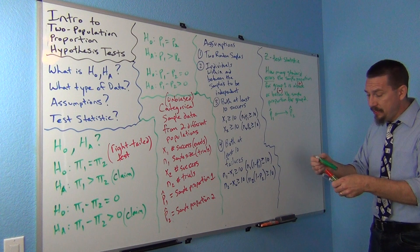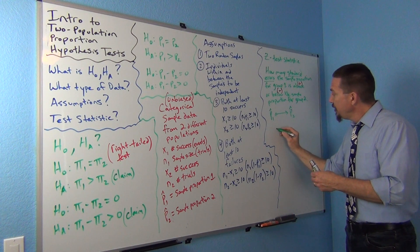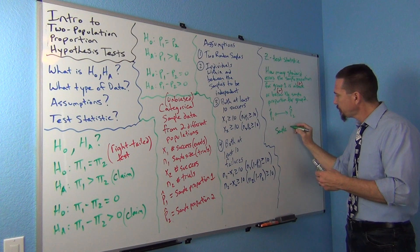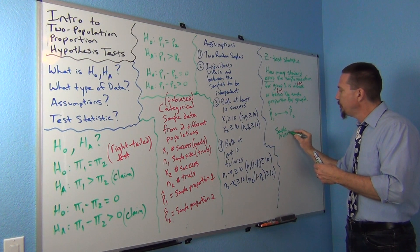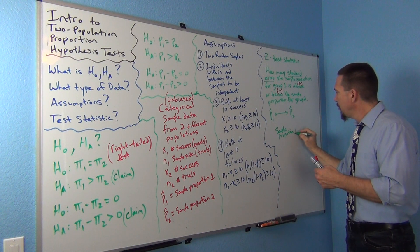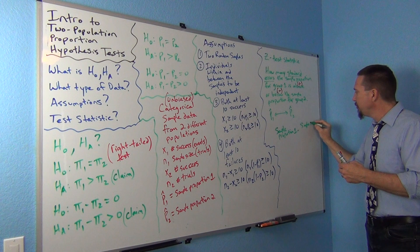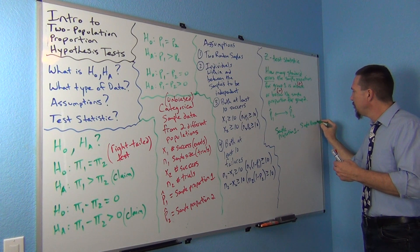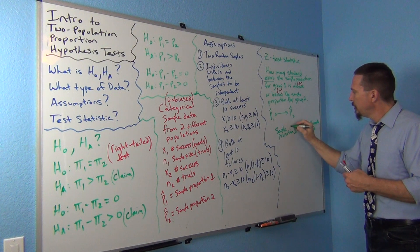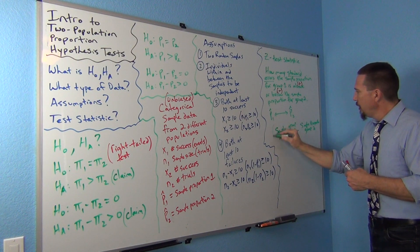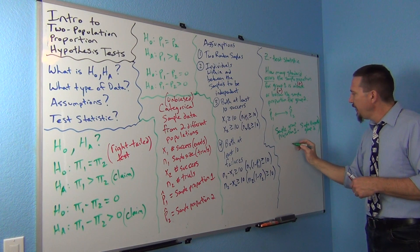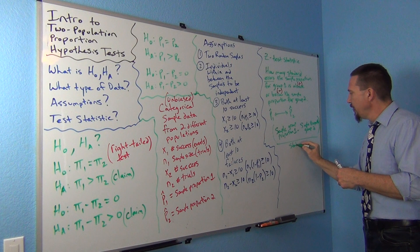So, the basic idea is you take your sample from group one, so your sample proportion for group one minus the sample proportion for group two, and then we're going to divide by the standard error, right? The standard error.